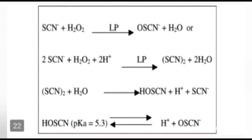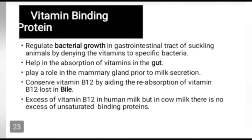Vitamin binding property: certain proteins present in milk of some species bind with essential vitamins and regulate bacterial growth in the gastrointestinal tract of young animals by denying vitamins to specific bacteria. They also help in the absorption of vitamins in the gut. Proteins in human milk not only provide amino acids but also bind to and facilitate absorption of nutrients and help in the digestion of other nutrients. They play a role primarily in milk secretions and in the synthesis of milk fat, and conserve vitamin B12 by aiding reabsorption of vitamin B12 lost in bile.